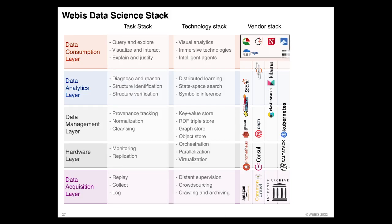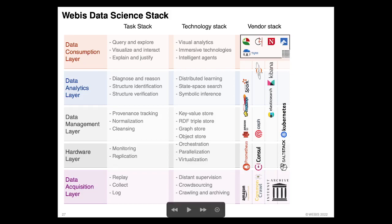The tasks we try to solve include on the acquisition layer: how can we crawl things properly, how do we collect the data, and how can we replay it — especially in the context of web archives, which I'll detail in a minute. The hardware and data management layer is a necessary evil that we have to organize properly. Data needs to be cleansed, normalized, and provenance needs to be tracked — this kind of research data management is important to us.